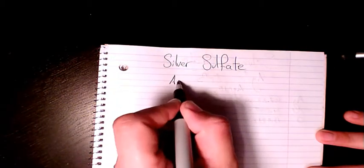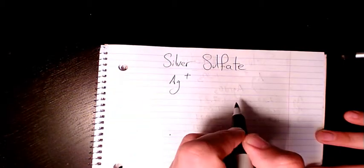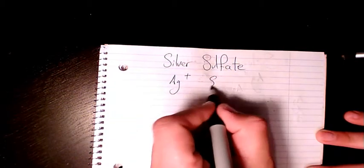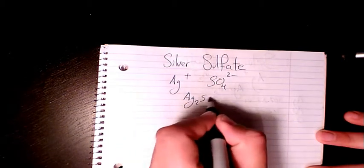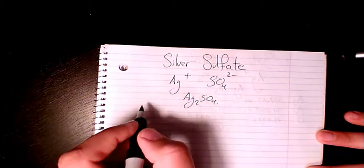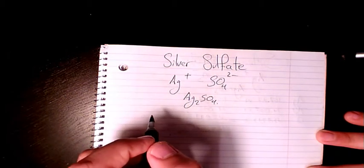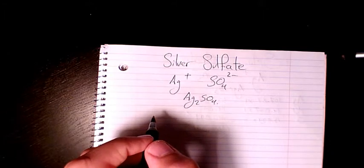And sulfate is the polyatomic ion with charge minus two. So when you combine them, it's going to be Ag2SO4. And if you want to find out the molar mass, you need to list all the elements and then write the atomic mass of each of them.